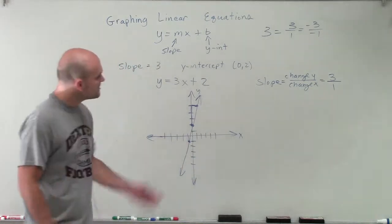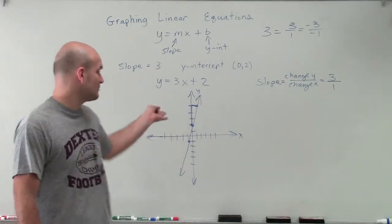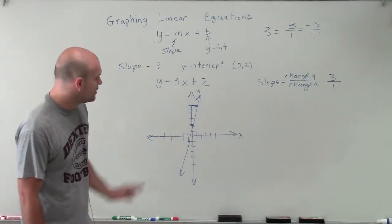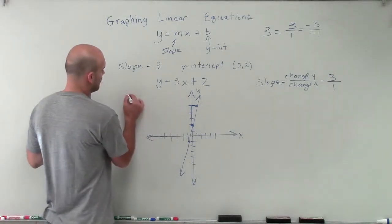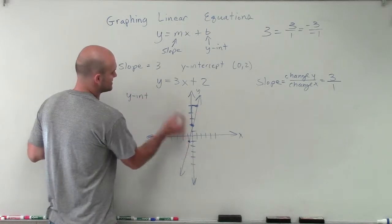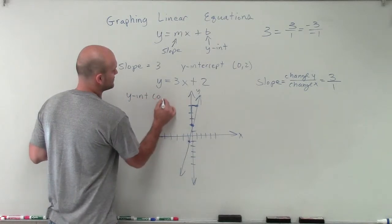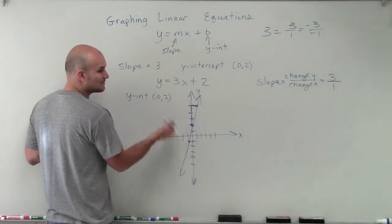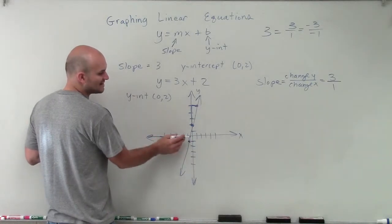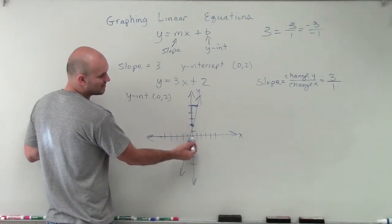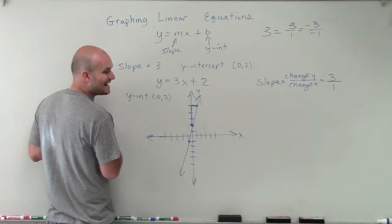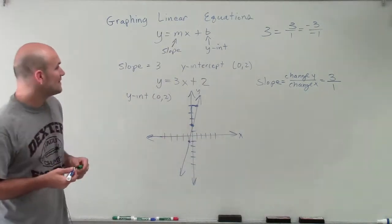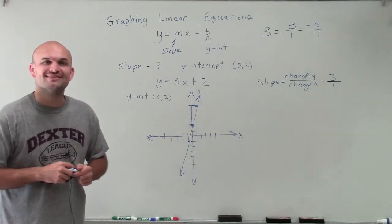Since we have a linear equation, we understand we're not going to have a maximum or minimum point. We do have a y-intercept at the point (0, 2), which is already given to us. And our x-intercept — we'll learn how to find this later — but we can determine it's going to be between negative 1 and 0 on the x-axis. That is how you graph a linear equation. Thanks.